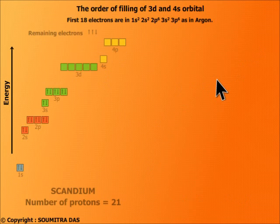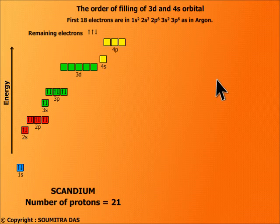Now for the next element scandium, the number of protons is 21 and what happens to the energy of 3d orbital? It becomes less than 4s. So the 19th electron will go to 3d orbital and not the 4s orbital.